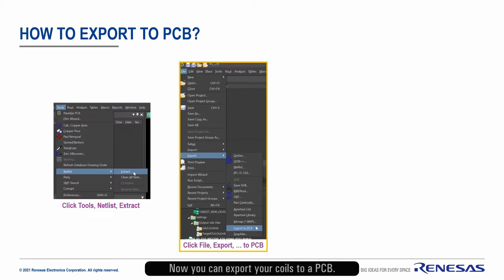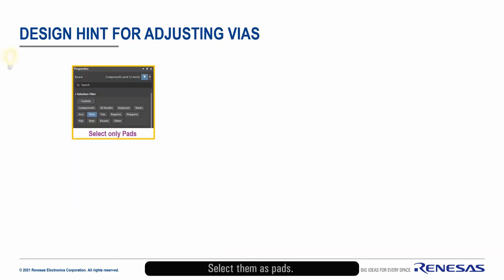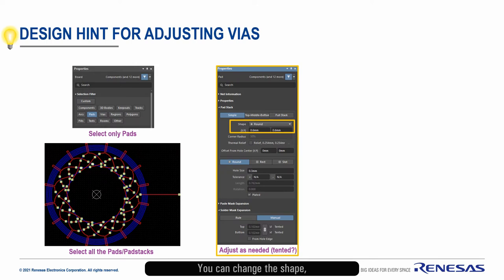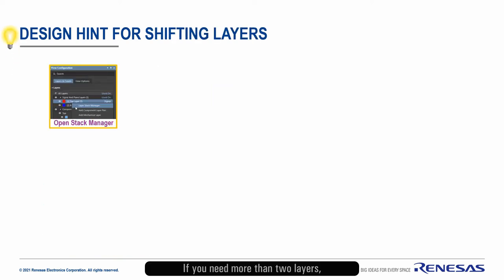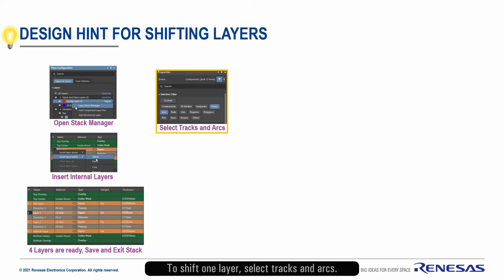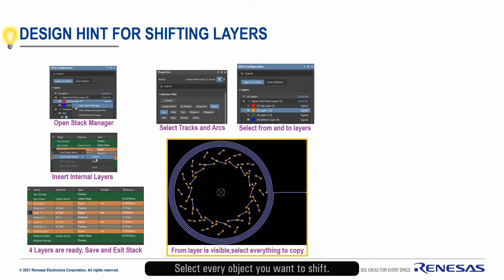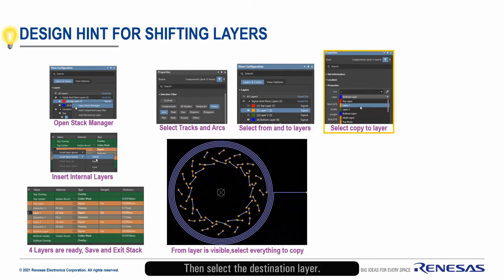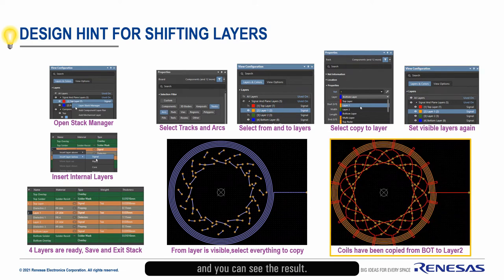Now you can export your coils to a PCB. You can adjust VIAs by selecting them as Pads. You can change the shape, the hole size, and pad size as well. If you need more than two layers, adjust the layer stack. To shift one layer, select Tracks and Arcs. Make sure only the source and destination layers are visible. Select every object you want to shift, then select the destination layer. Turn on all visible layers again and you can see the result.